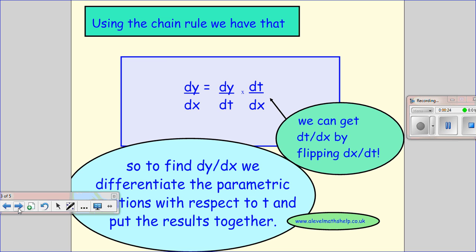So when I want to differentiate, because I've got x and y in terms of t, I can obviously differentiate x and differentiate y with respect to t. But because I want to get dy by dx out, I use the chain rule to use my differentiation results to get what I want.